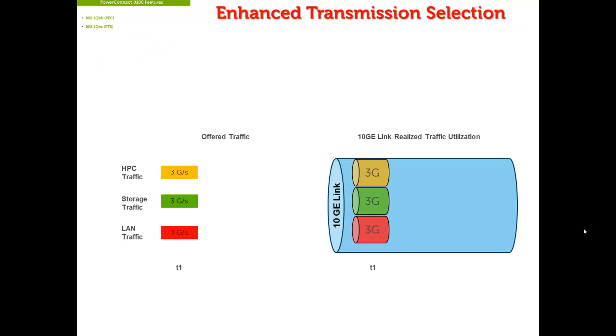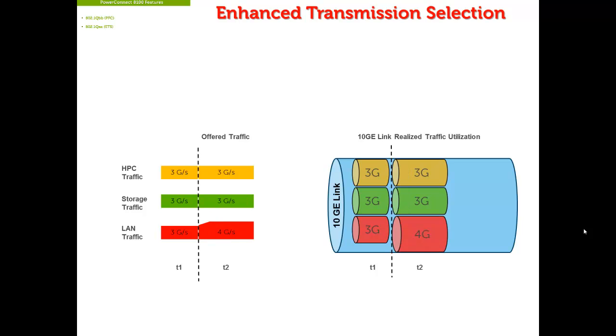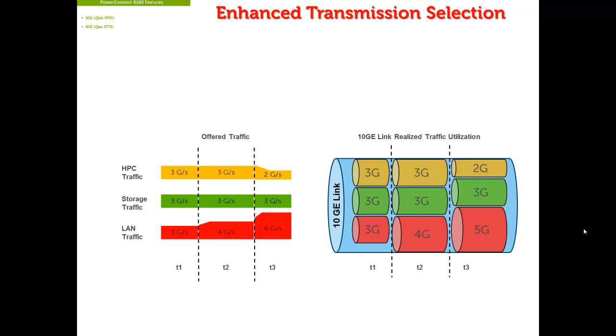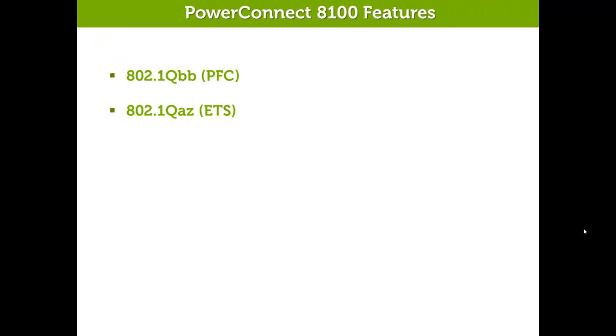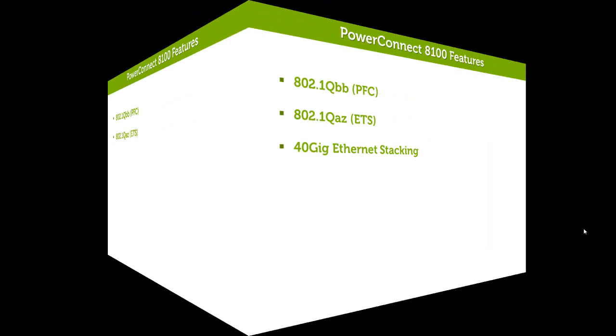Another important feature is IEEE 802.QAZ, or Enhanced Transmission Selection, or ETS, that defines how much bandwidth can be assigned to each of the PFCs. It prevents a single traffic class from using all the bandwidth and starving other classes. The bandwidth assignment is in percentages. For example, if 10% of a 10GB link is assigned to an iSCSI PFC, a guaranteed minimum of 1GB is assigned to that PFC. When a given PFC doesn't fully utilize its allocated bandwidth, the bandwidth is available to other classes or PFCs.